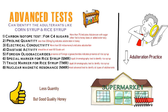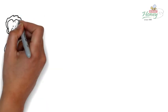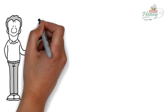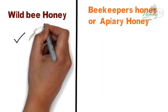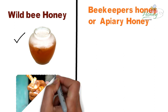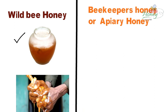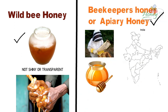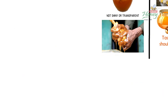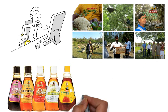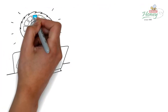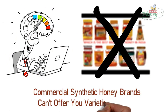Meanwhile, here are a few suggestions to help you choose real honey. Look for a local source, be it wild bee honey or beekeeper or apiary honey. When buying wild bee honey, keep in mind it will always be cloudy as it is extracted by squeezing honeycombs — it will not be shiny or transparent. When choosing beekeeper or apiary honey, make sure it has a taste and aroma specific to that area. If local honey is difficult to find, search for a brand with direct access to its honey source that can provide varieties, since synthetic or adulterated brands cannot offer varieties of honey.